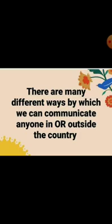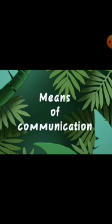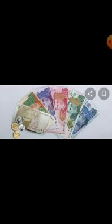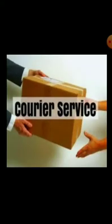There are many different ways by which we can communicate with anyone in the country or outside of the country. The first means of communication is post offices. For ordinary people, the postal system is a very good means of communication. A letter can be sent to any part of the world. You can even send money by money order within the country. Through post offices, courier services also deliver documents or parcels.